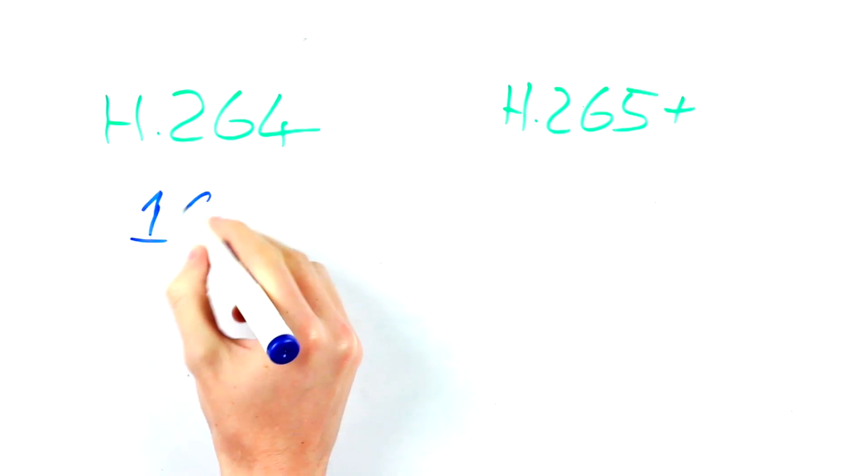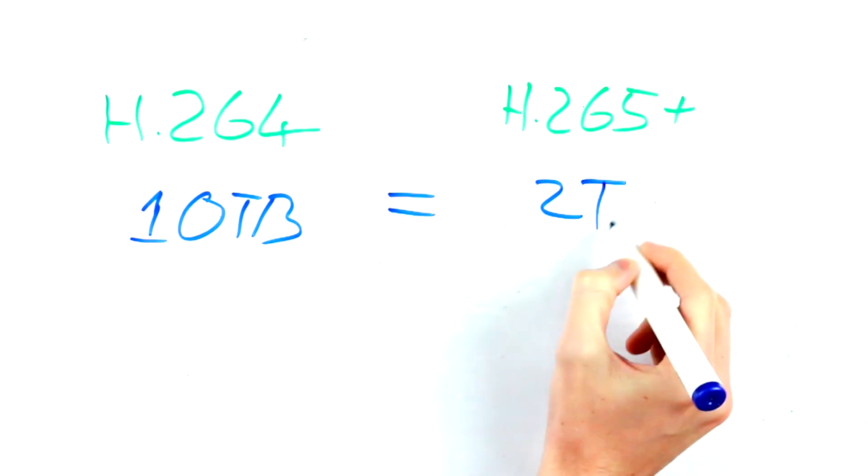Now traditionally the most popular codec used by IP cameras was H.264, but recently brands like Hikvision introduced the new H.265 Plus codec that offers incredible video compression. A camera setup that took up 10TB using H.264 will now only take up 2TB using H.265 Plus.